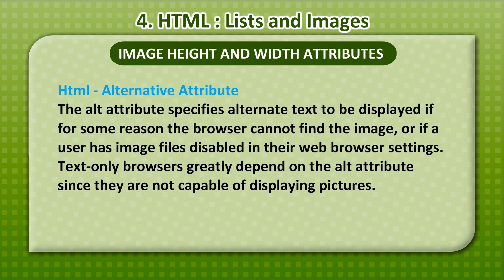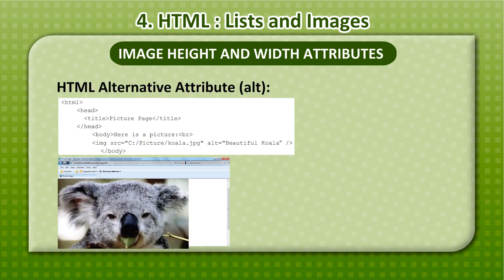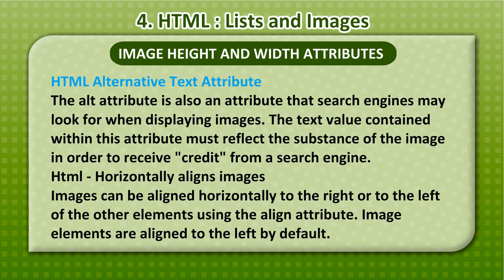HTML alternative attribute: the alt attribute specifies alternate text to be displayed if the browser cannot find the image, or if a user has image files disabled in their browser settings. Text-only browsers greatly depend on the alt attribute since they cannot display pictures. The alt attribute is also used by search engines when displaying images.